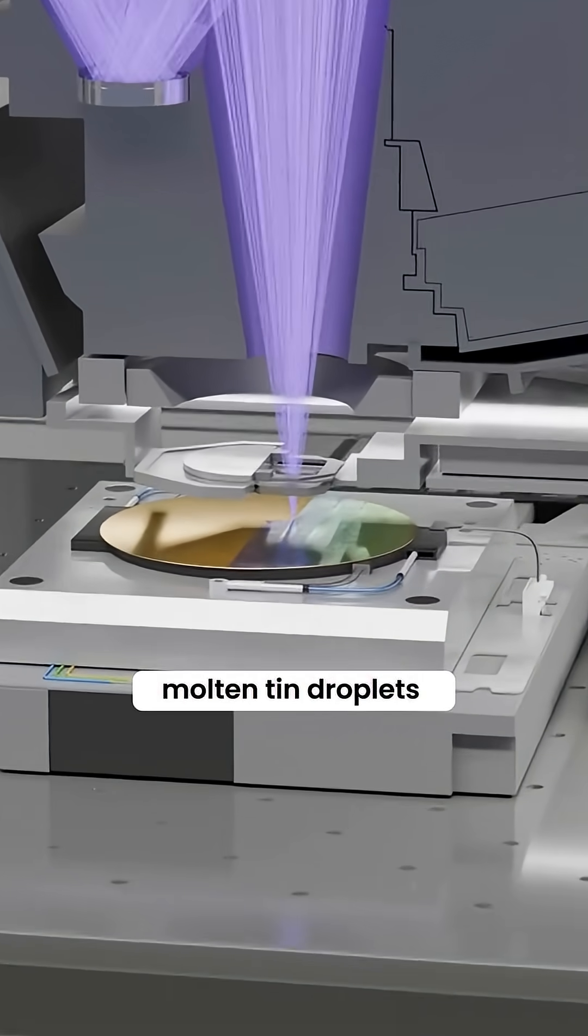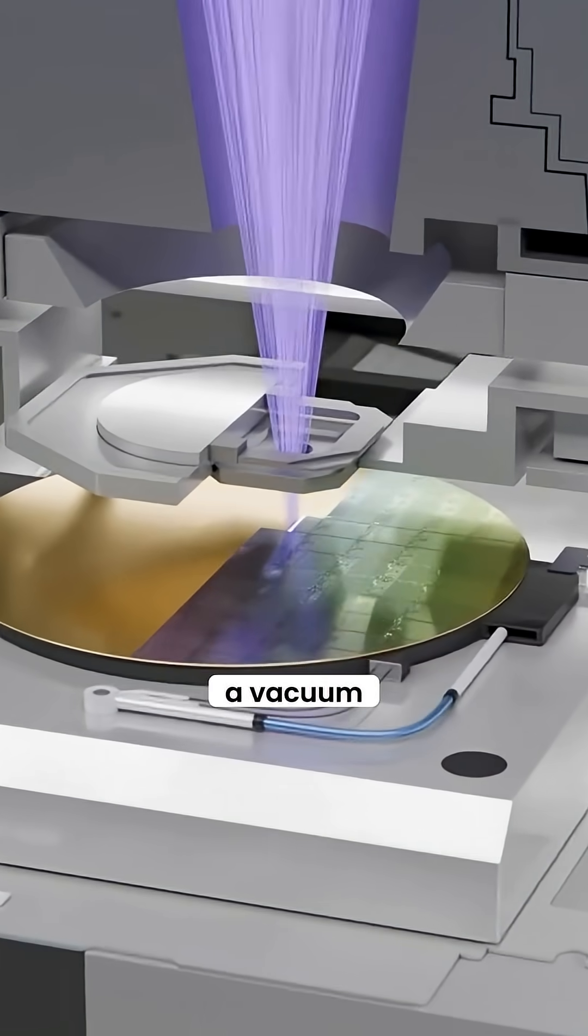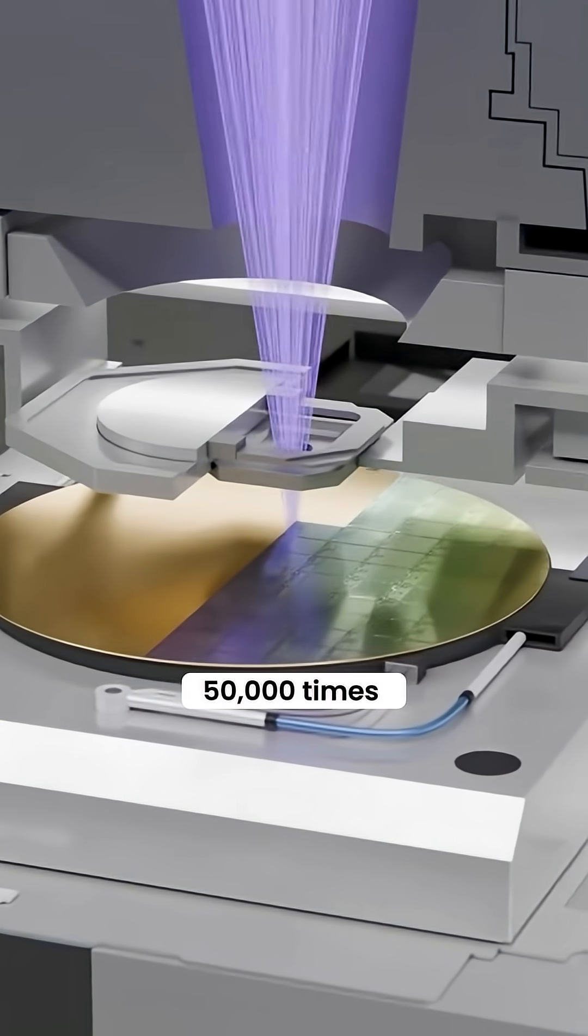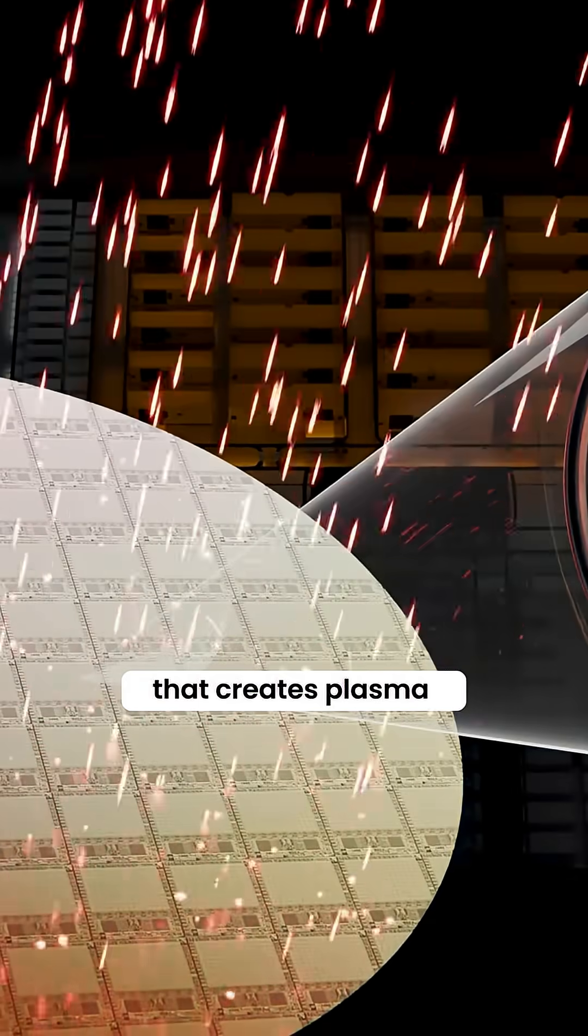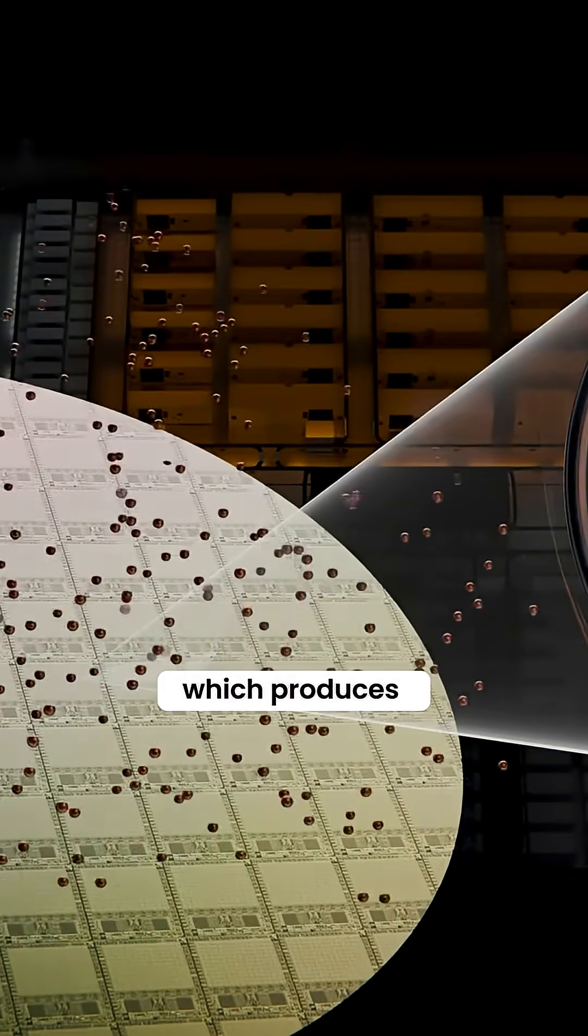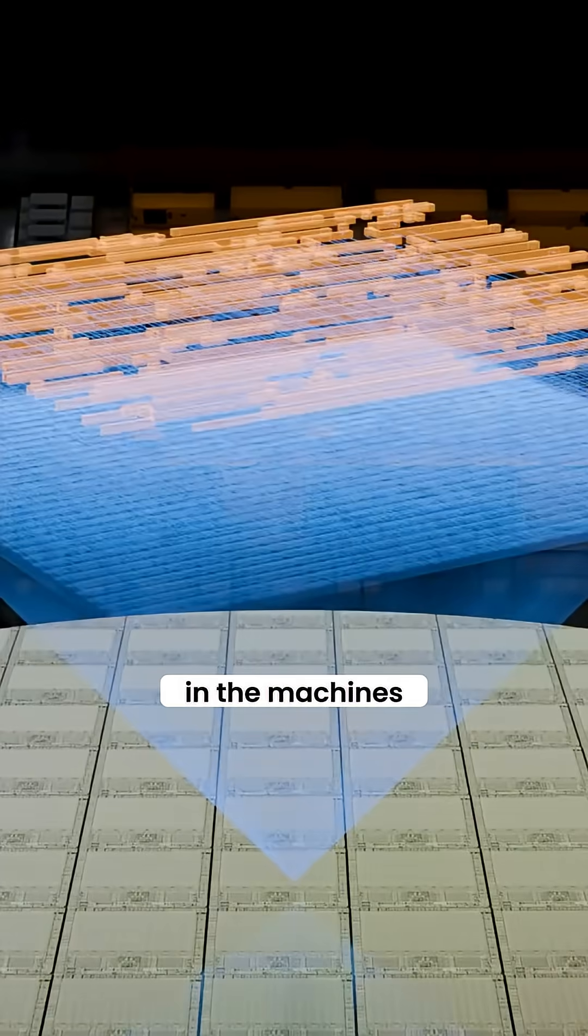The process is wild. Molten tin droplets are shot through a vacuum and lasers hit them 50,000 times a second. That creates plasma hotter than the surface of the sun, which produces the EUV light used in the machines.